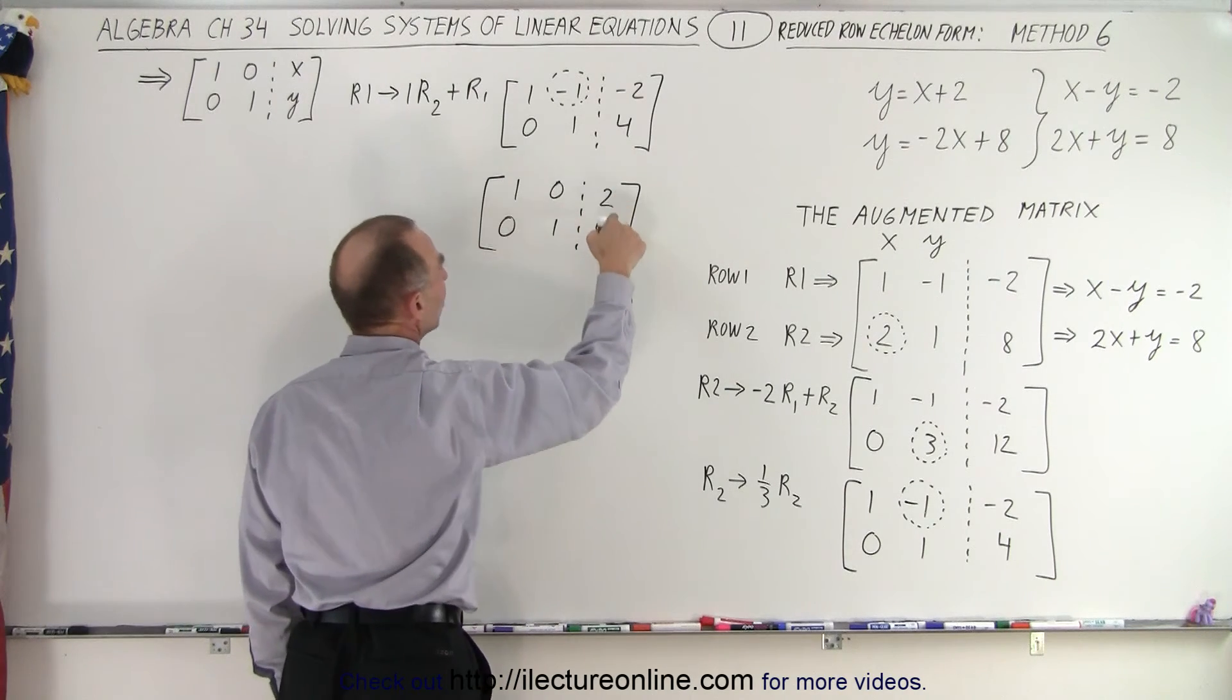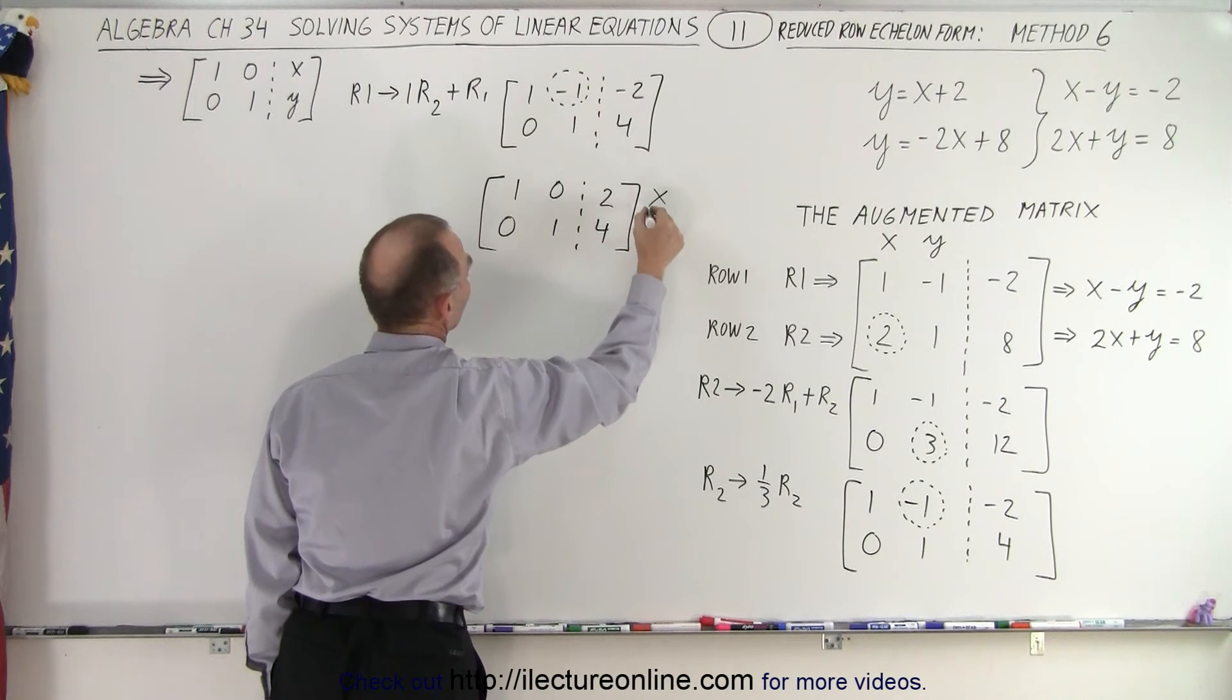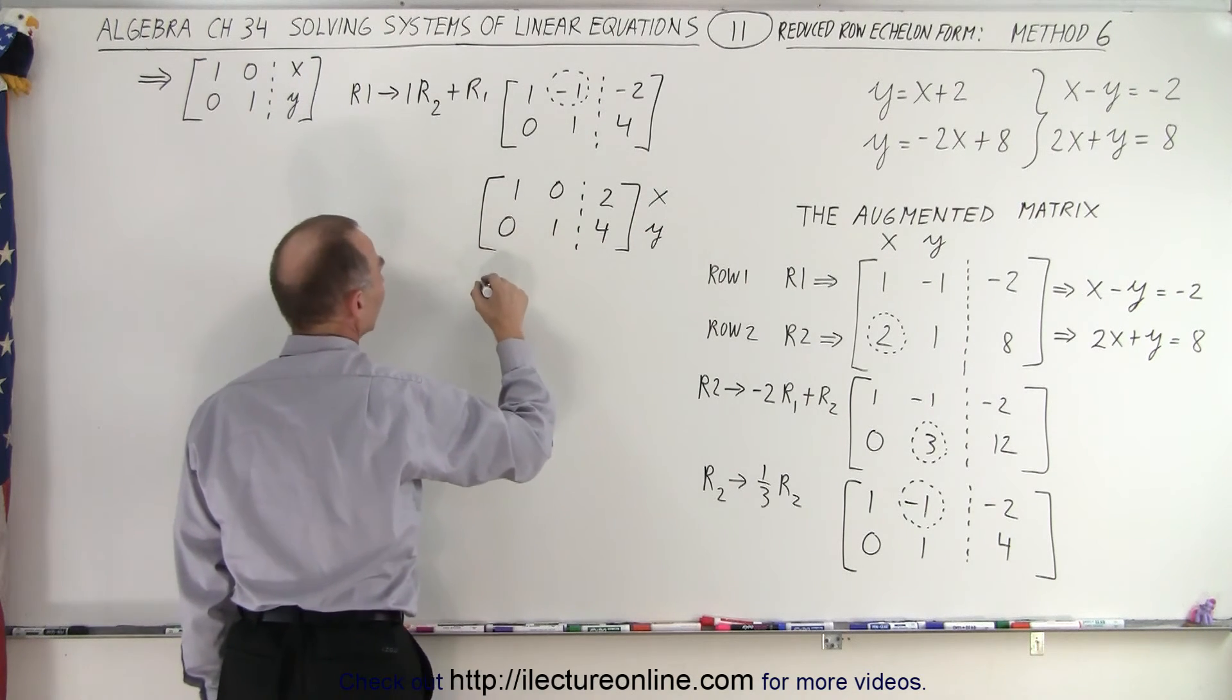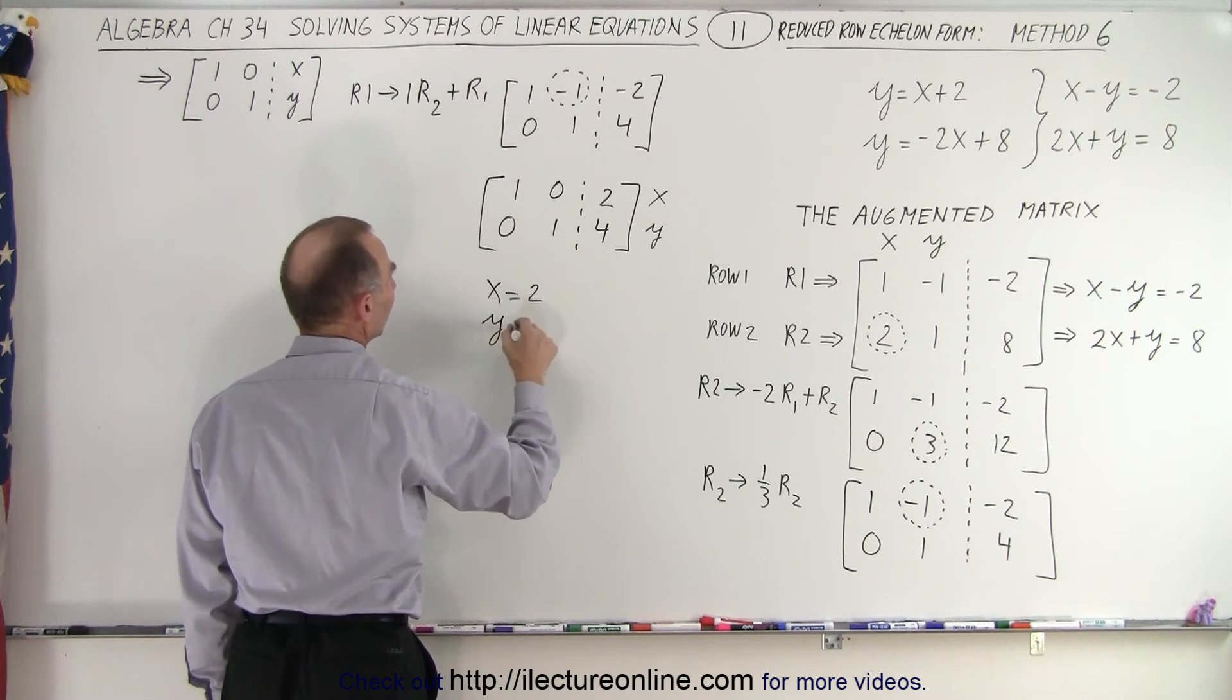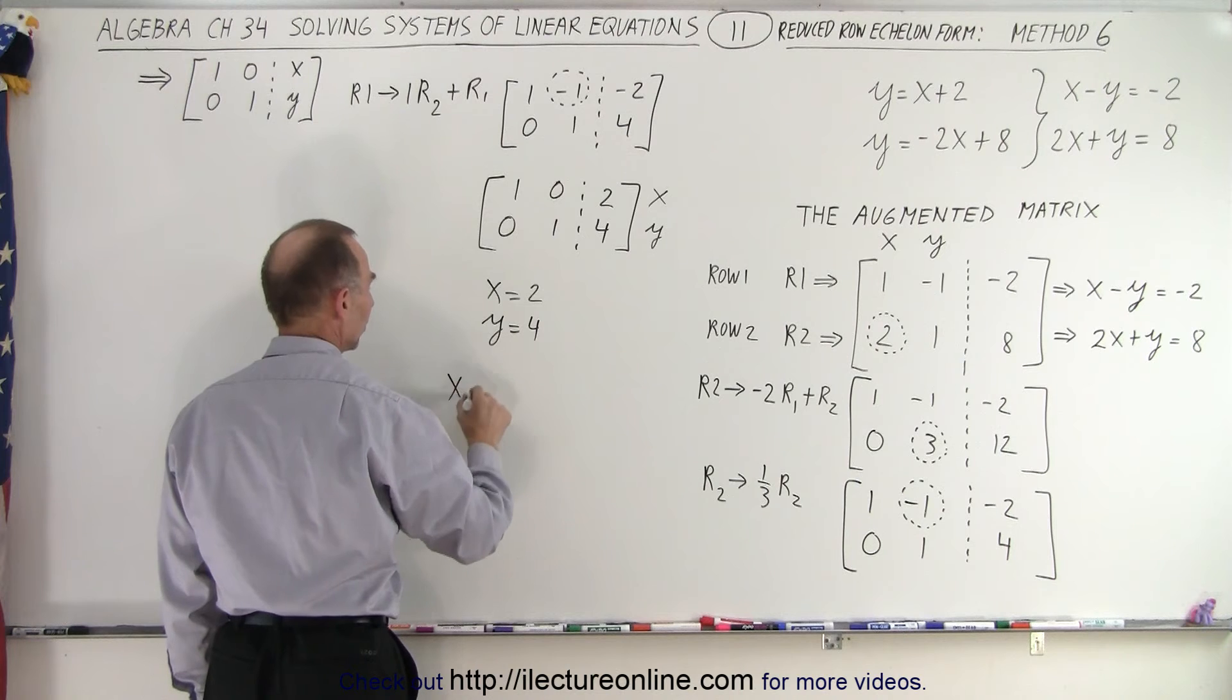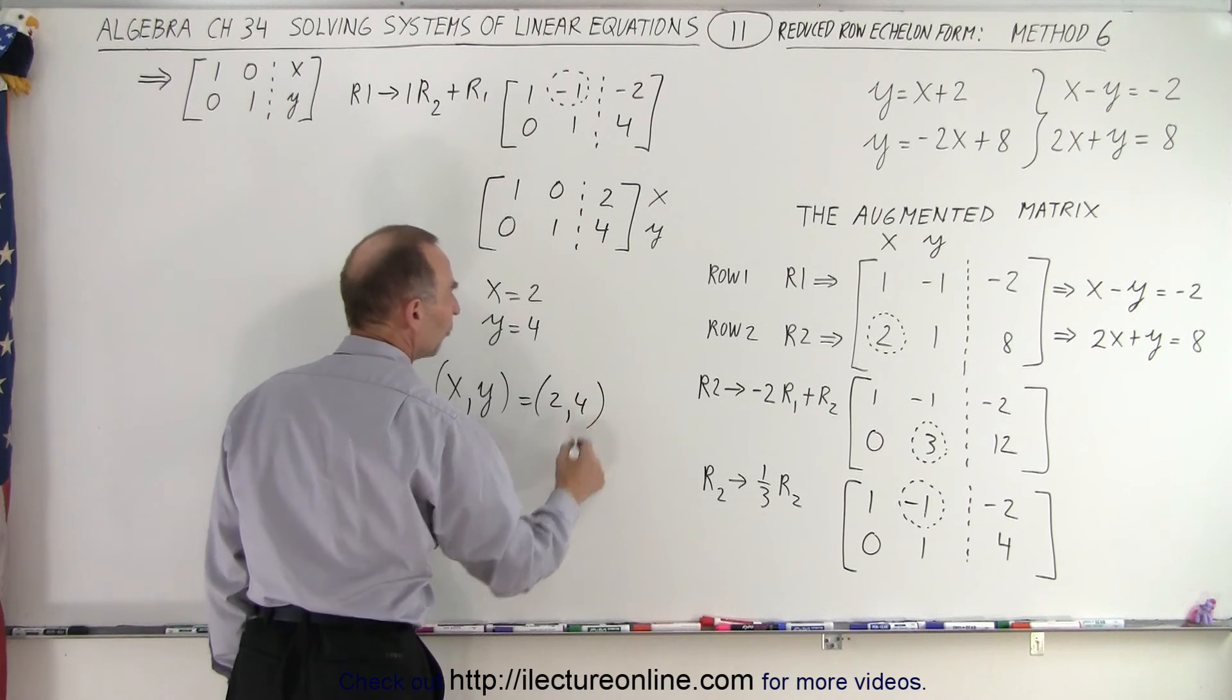Notice that these are the x and y values of my solution. This is my x, this is my y. So x equals 2 and y equals 4. My solution, my x and y coordinates, are simply 2 and 4.